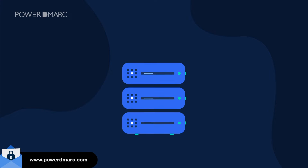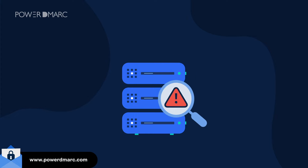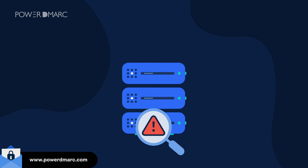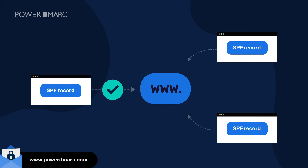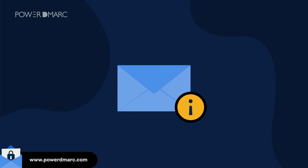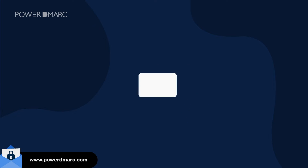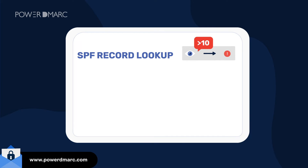The receiving mail transfer agent failed to find an SPF record published on your DNS. You have multiple SPF records published on your DNS for the same domain. Your email vendors have changed or added IP addresses which have not been updated on your SPF record. You have exceeded the 10 DNS lookup limit for SPF.